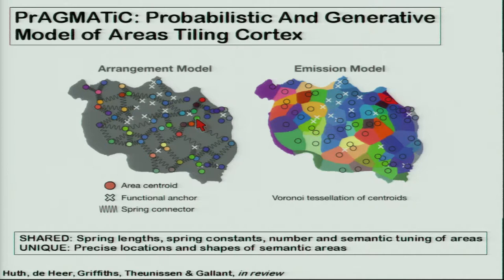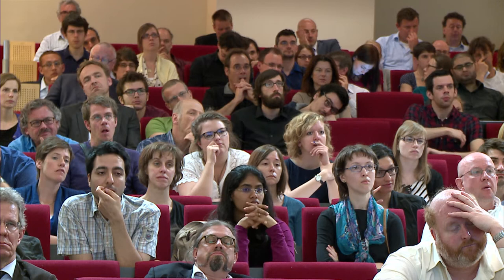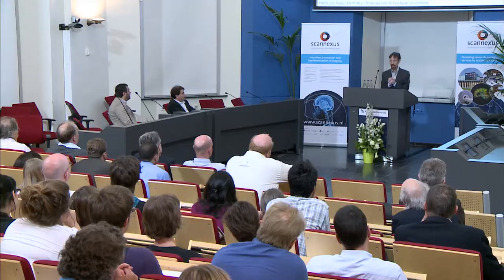Small X's on the model serve as pins — centers of functional areas derived from independent localizer datasets — used to keep the ball-and-spring model from drifting. In this model, the spring lengths, spring constants, number, and semantic tuning of individual areas are shared across all subjects. What differs across subjects is the precise locations and shapes of the semantic areas, which come from the probability distribution.